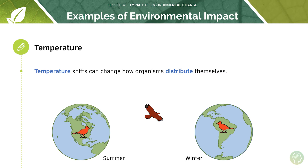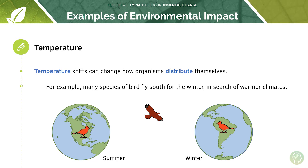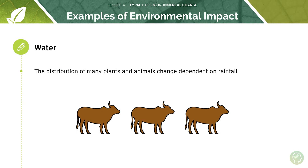Temperature shifts can change how organisms distribute themselves. For example, many species of bird fly south for the winter in search of warmer climates. So the environment can affect organism distribution — species distribution.